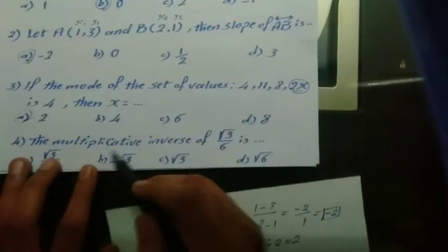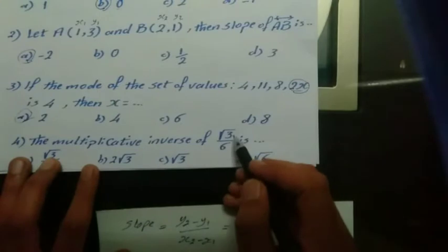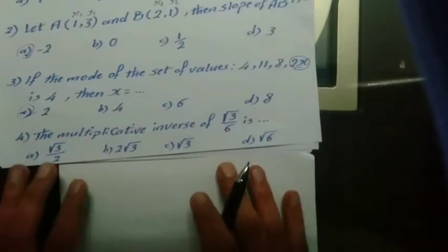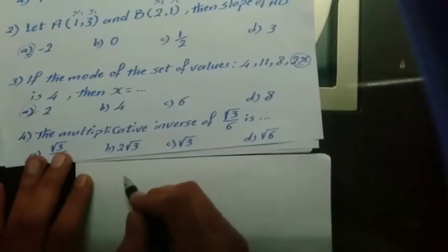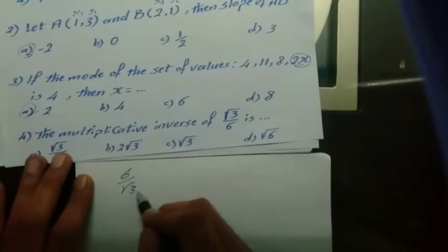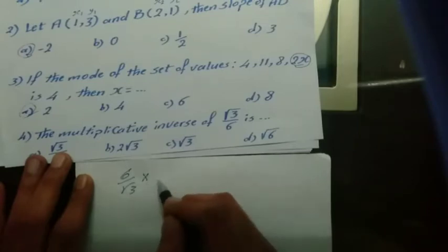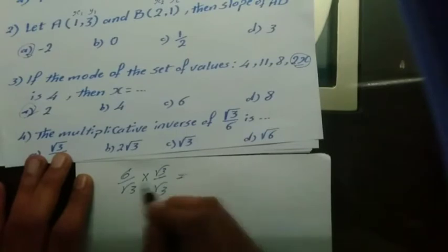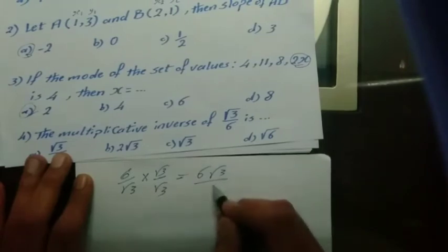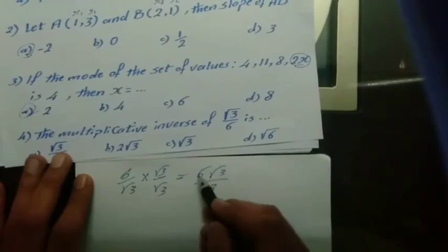The multiplicative inverse of square root of 3 over 6 is found by flipping the fraction, giving 6 over root 3. To remove the square root from the denominator, multiply by root 3 over root 3: 6 times root 3 over root 3 times root 3 equals 3, so the result is 6 root 3 over 3, which simplifies to 2 root 3.